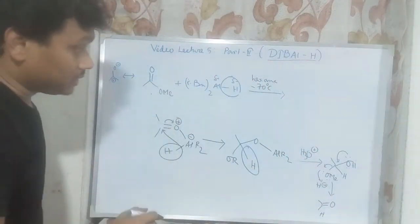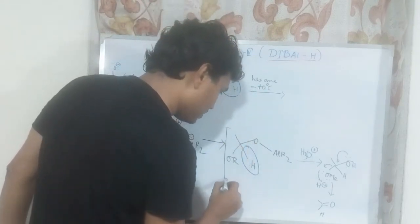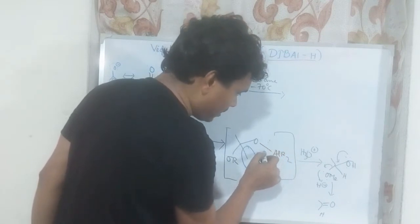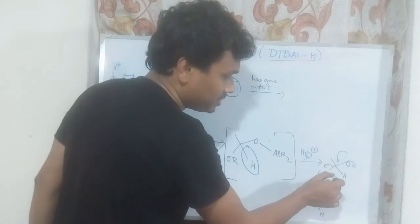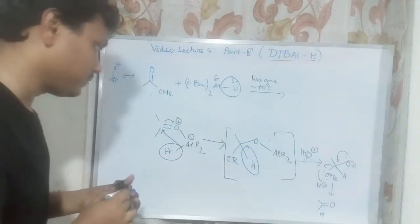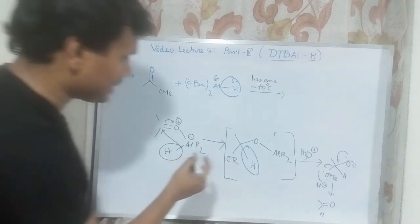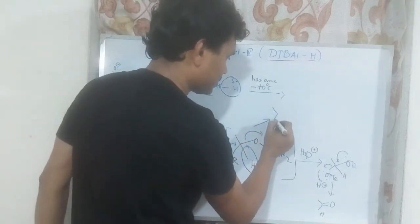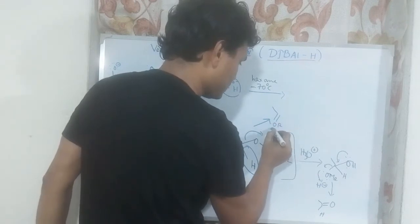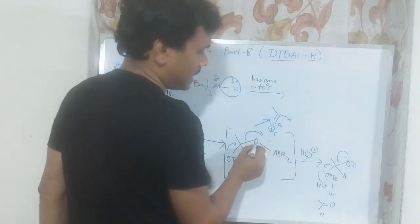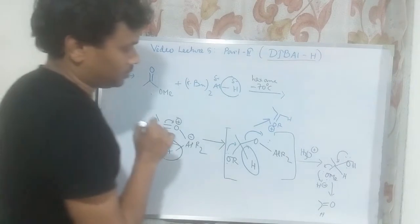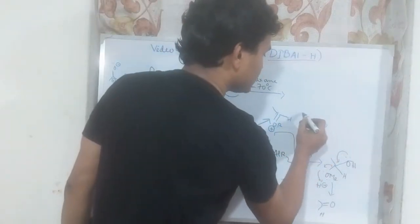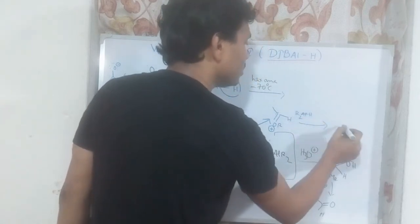At minus 78 degrees Celsius, this intermediate is stabilized, so water can hydrolyze it — breaking the bond and converting the hemiacetal to the corresponding aldehyde. But if we increase the temperature, the lone pair of oxygen will push and produce OR plus this aluminum alkoxy species. This is also a carbonyl group and, being more activated compared to an ester, it may be further reduced by the aluminum hydride to the corresponding alcohol.